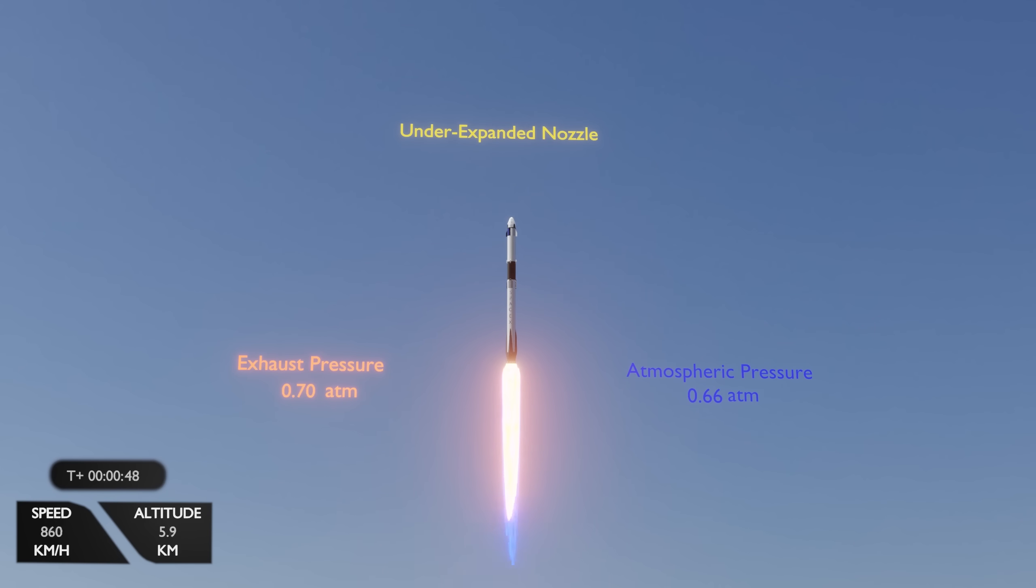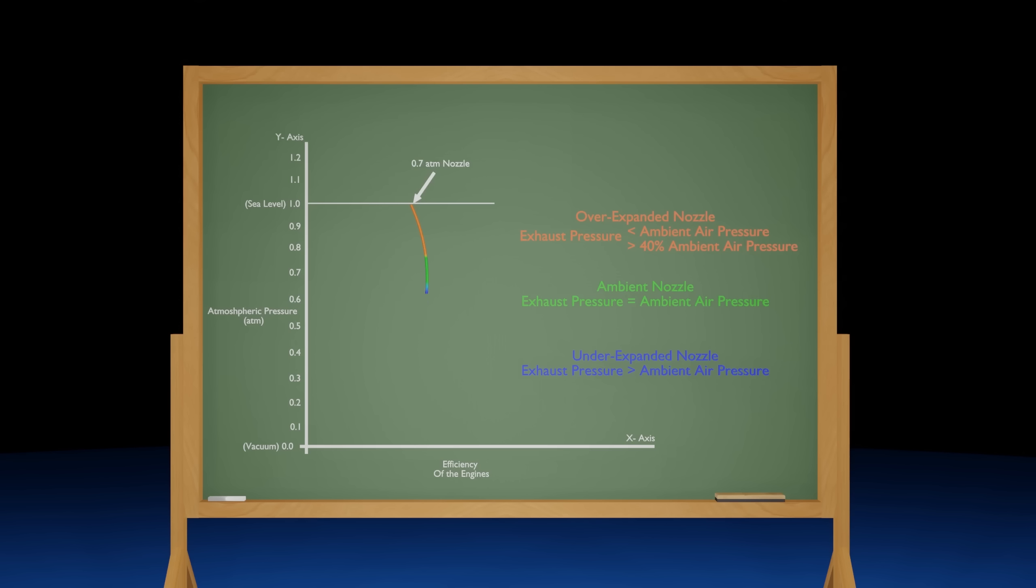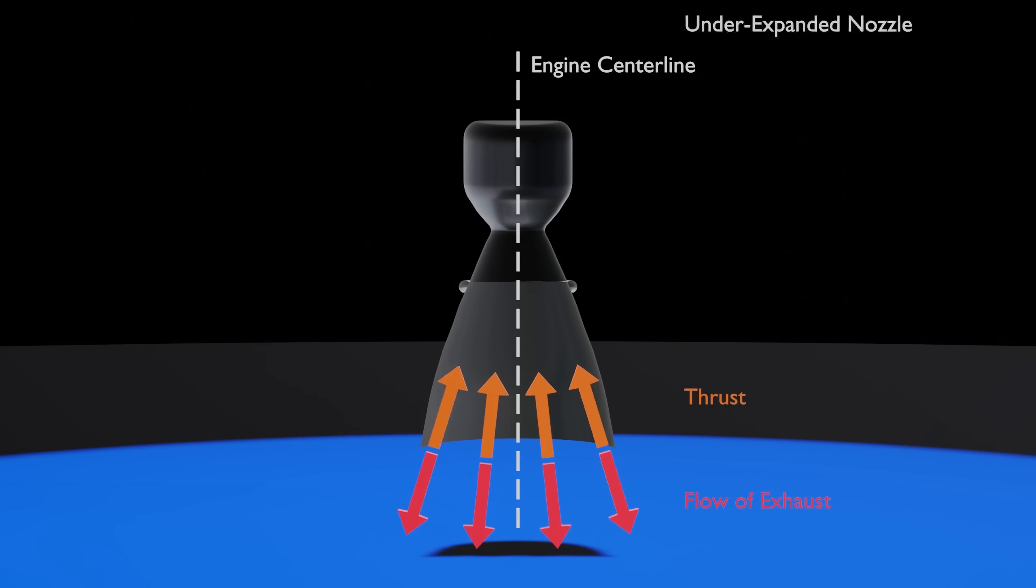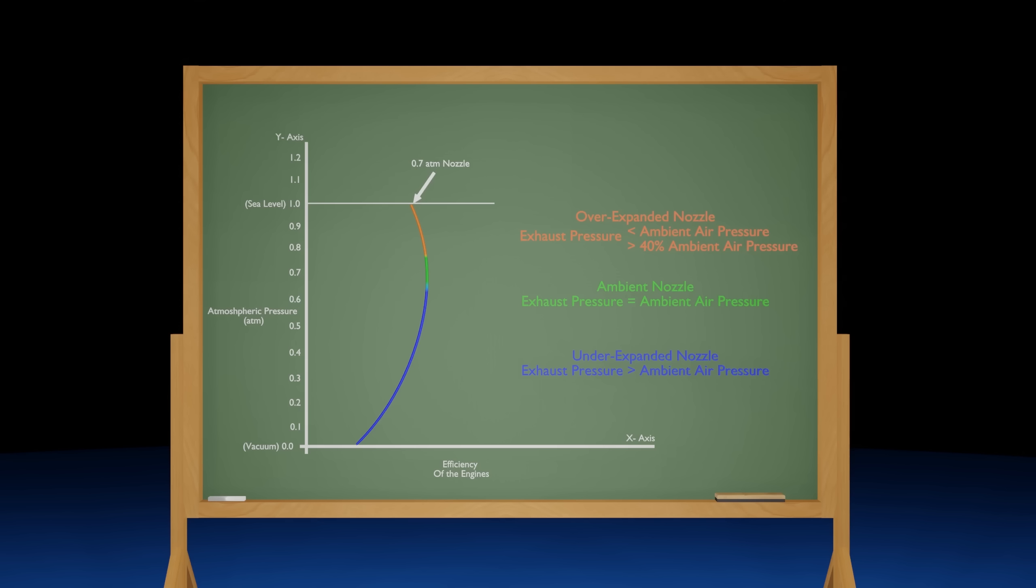As the rocket continues to climb in altitude and the ambient air pressure continues to lower, the exhaust pressure will now be greater than the ambient air pressure. This engine now has an under-expanded nozzle. The low ambient air pressure allows the exhaust pressure to expand into a wider plume. This is also a sign of inefficiency, as the rocket is beginning to project fuel horizontal to its heading. Now, because the rocket spends such a small portion of its flight in low altitudes and a large portion of its flight in high altitudes, a question develops.